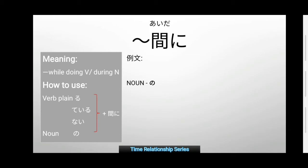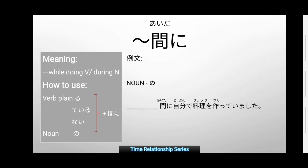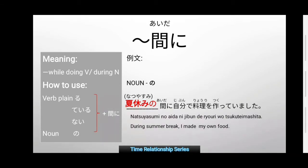Next, we have a sample for noun. Noun no [blank] aida ni, jibunde, ryori o tsukute kimashita. Jibunde means oneself. Ryori is cuisine or food — a meal. Tsukuru means to make. The noun we will use is natsuyasumi, or summer break. When a noun is placed before aida ni, we add the particle 'no' after the noun. So: Natsuyasumi no aida ni, jibunde ryori o tsukute kimashita. In English: During summer break, I made my own food.